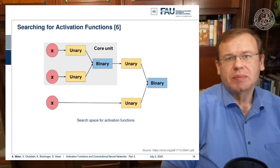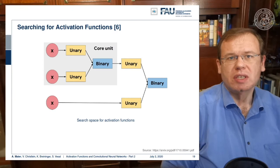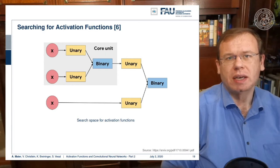The search space that they used is that they put in x into some unary function, then these unary functions were combined using a binary core unit. This could then be merged again with another instance of x that was then used to produce the final output using a binary function. So this is essentially the search space that they went through. Of course, they took this kind of modeling because you can explain a lot of the typical activation functions, like the sigmoid and so on, using these kinds of expressions.